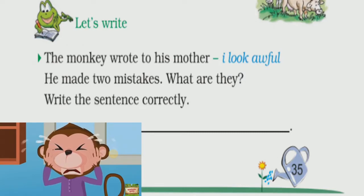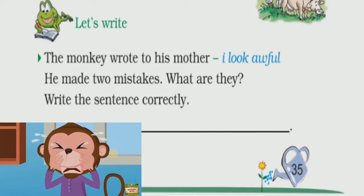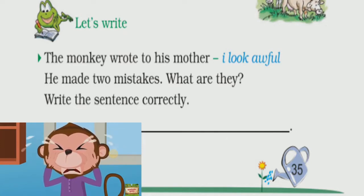Let's write. The monkey wrote to his mother: 'I look awful.' He made two mistakes. What are they? Write the sentence correctly.